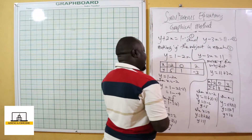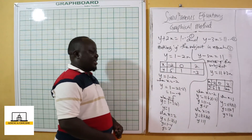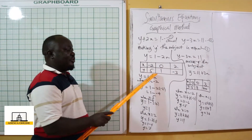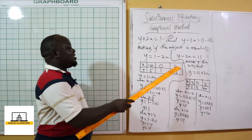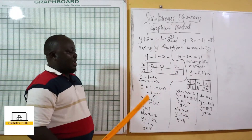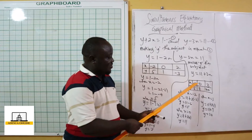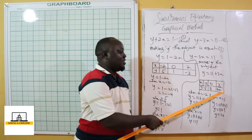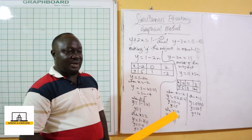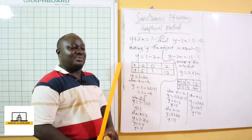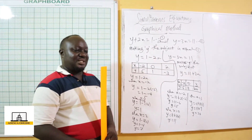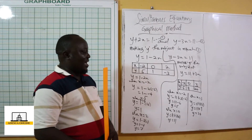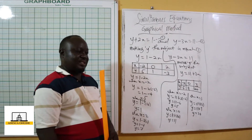With these corresponding values, for equation 1: x is negative 2 gives y is 5, x is 0 gives y is 1, x is 2 gives y is negative 3. For equation 2: x is negative 2 gives y is 5, x is 0 gives y is 11, x is 3 gives y is 20. We are going to plot these points on our xy-plane. The scale is two centimeters to one unit on the x-axis and two centimeters to two units on the y-axis.